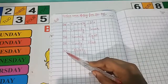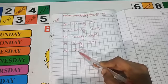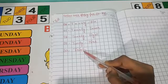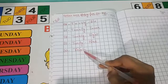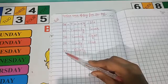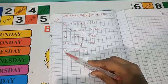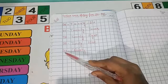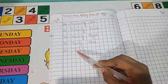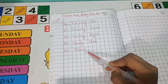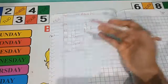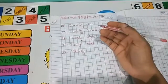Next, 30. T-H-I-R-T-Y, 30. The spelling of number 30 is T-H-I-R-T-Y, 30. Like this way, you have to learn it.